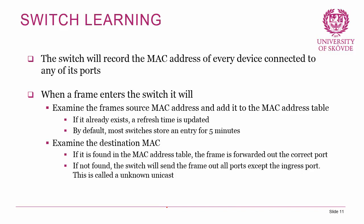Next, the switch examines the destination MAC address to decide where to send the frame. If it finds the destination MAC address in the table, the frame is forwarded out the correct port. If it cannot find the destination MAC address, the switch sends the frame out all ports except the ingress port — this is called an unknown unicast. It's important to note this is not a broadcast; it's an unknown unicast, which behaves similarly but differs in terminology.